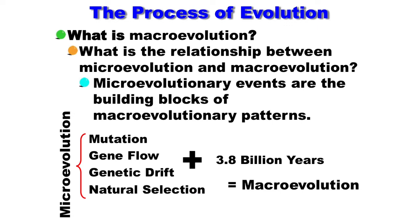Microevolutionary events are the building blocks of macroevolutionary patterns. What are the driving forces behind microevolution? Mutation, gene flow, genetic drift, and natural selection — this is basically what happens to any species every day. If we consider the accumulation of all these driving forces over millions and billions of years, we get macroevolution.